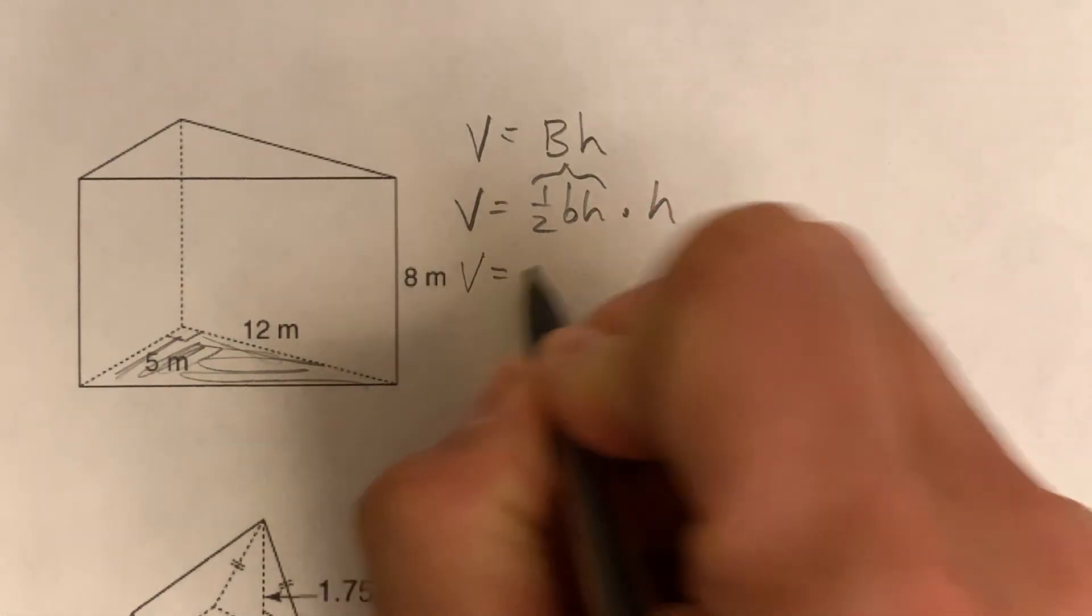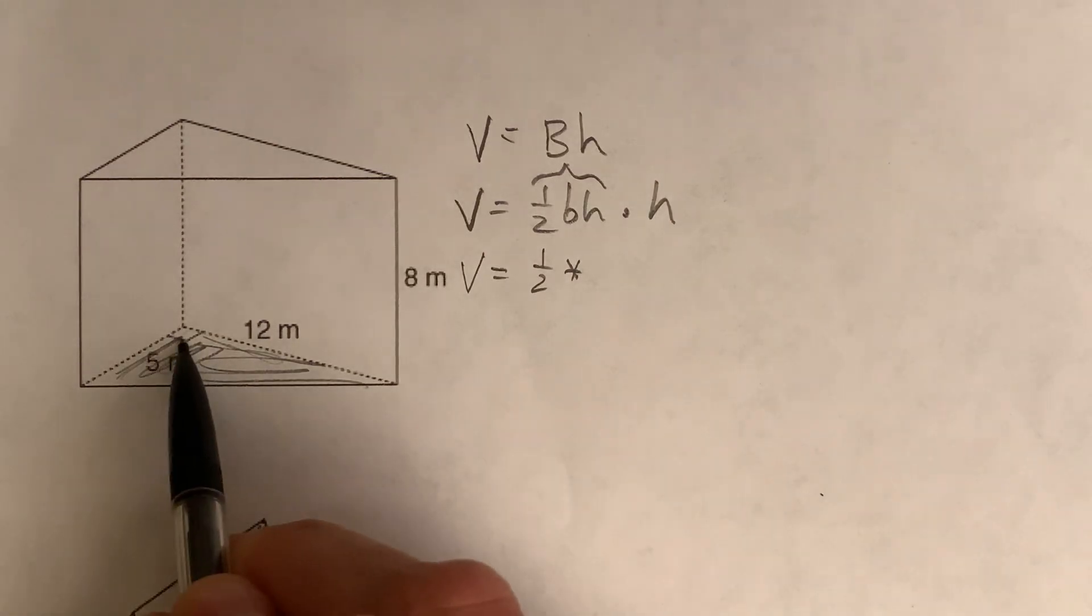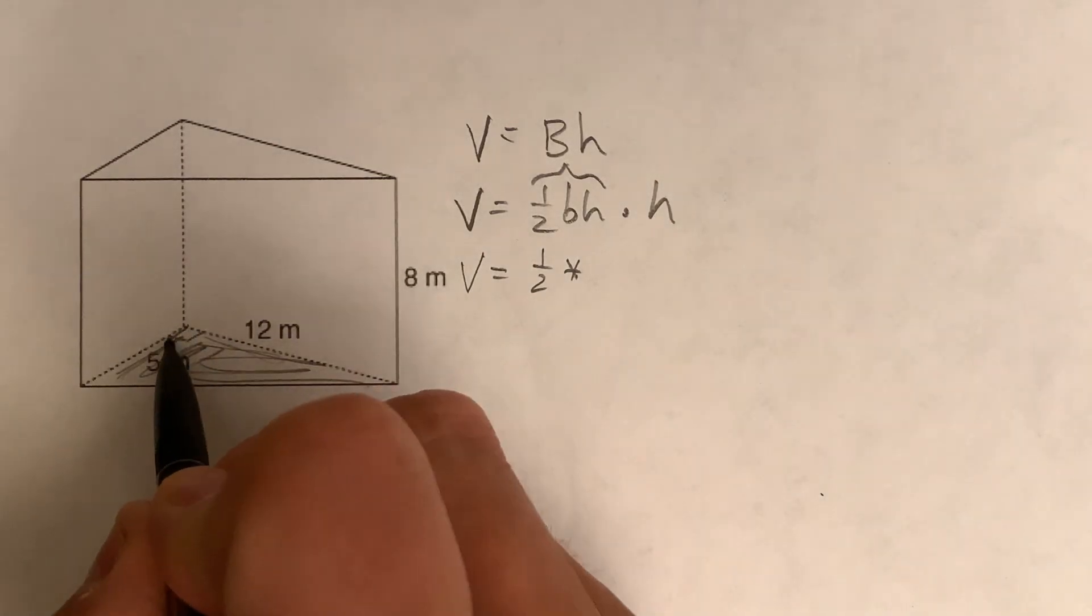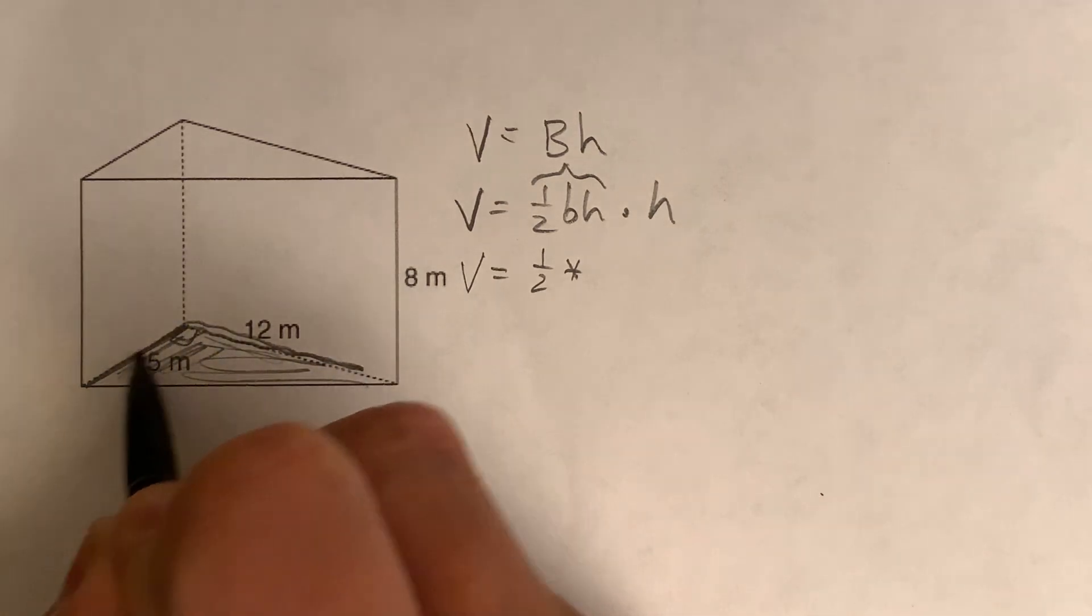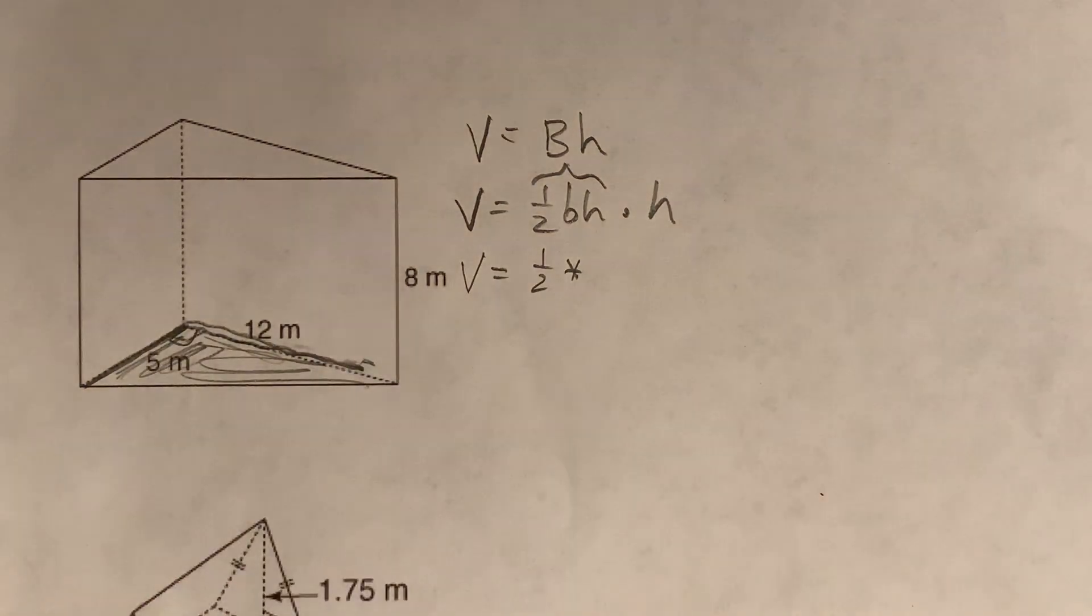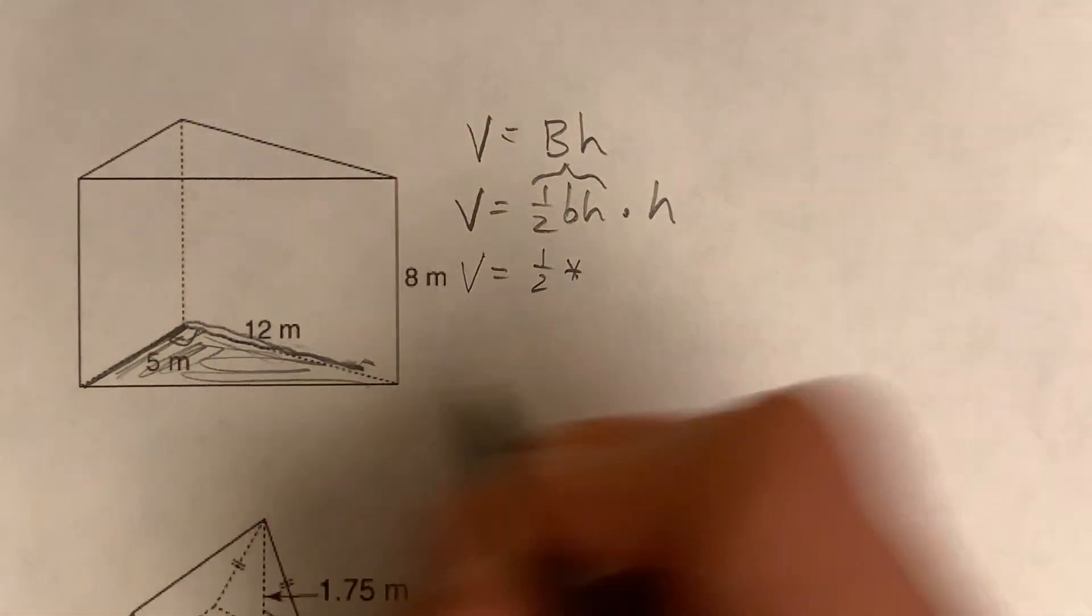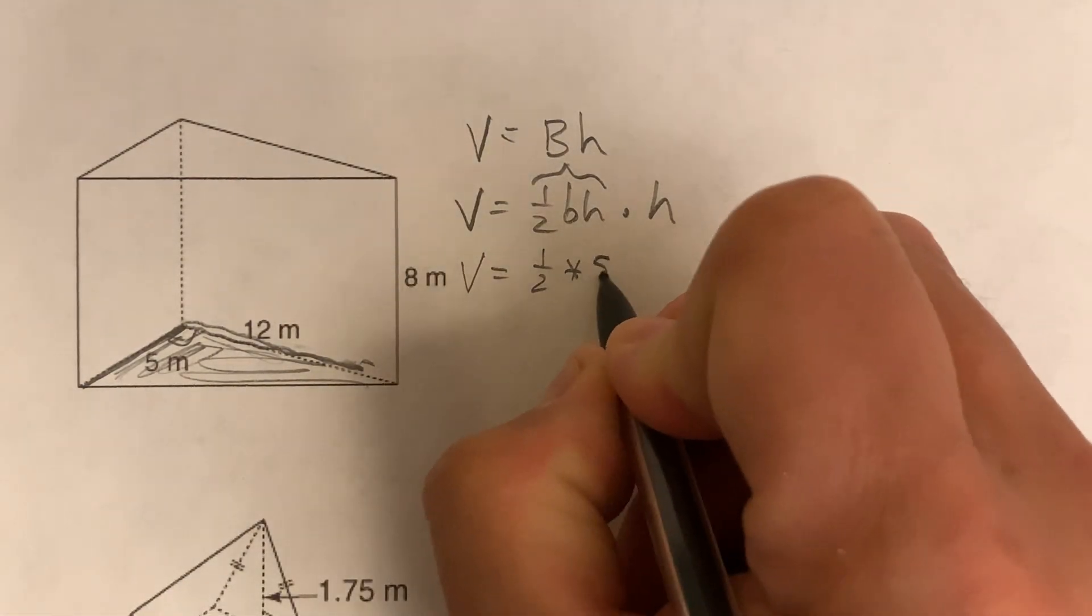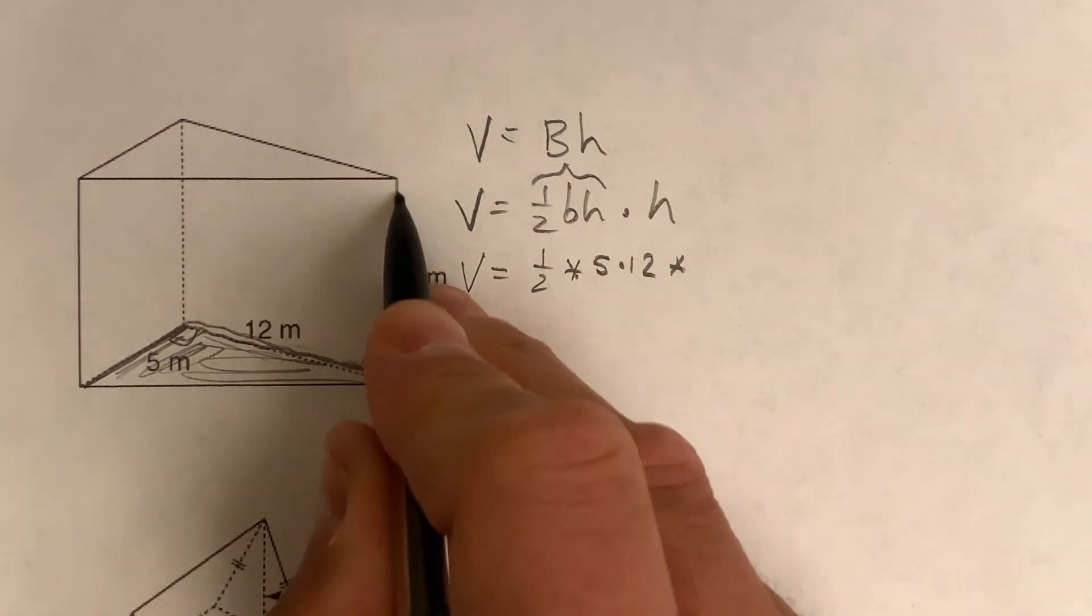So let's start filling things in. Let's see what we got here. Half the base of, well, this is a right angle right here, isn't it? Right there, which means this is perpendicular. So this is the base and height hitting right there, meeting, intersecting right there. So that's the base and height of the triangle. So it's going to be five times 12. And then the height of the prism is eight.